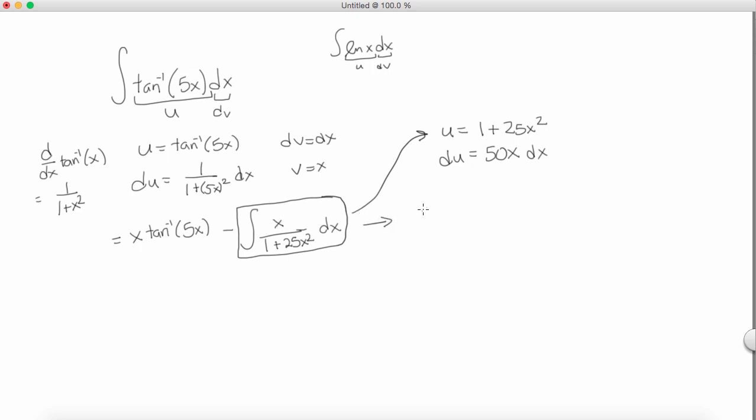What I'm going to do right here is write 1 over 50 times the integral of 50x over 1 plus 25x squared dx. Now, what I've done here is I've multiplied this integral by 1 by multiplying it by 50 over 50. But what I'm able to do is separate those two. So, I'm going to pull this constant out in front, leave the 50 on the inside there.